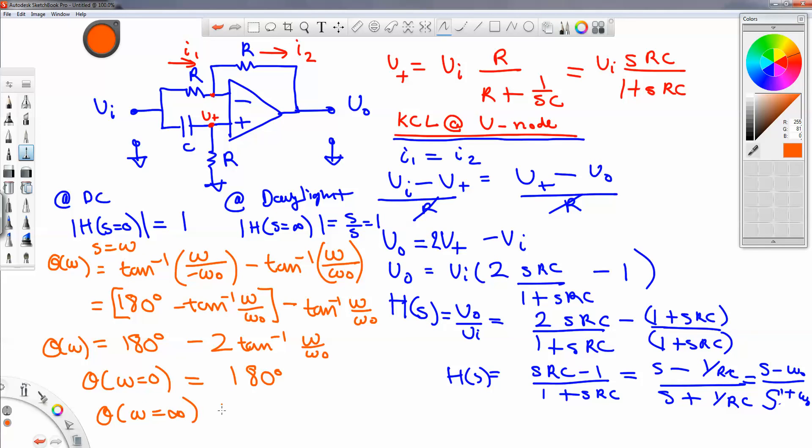At daylight, you have 180 minus two times 90. Right. Tangent inverse of infinity is 90 degrees, and this gives you zero. So this is indeed an all-pass filter, by what we have proved so far.